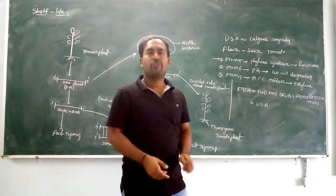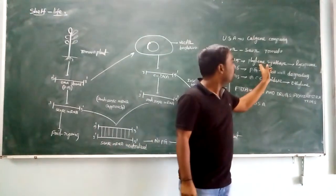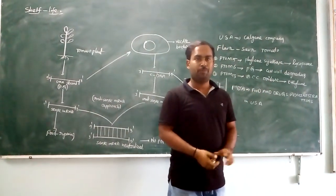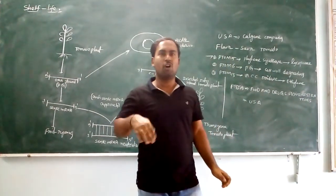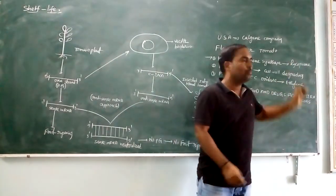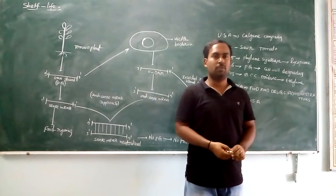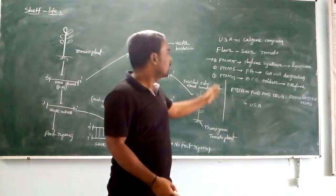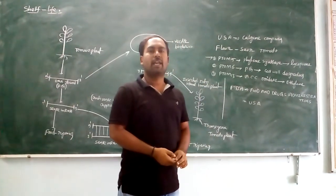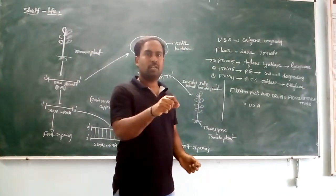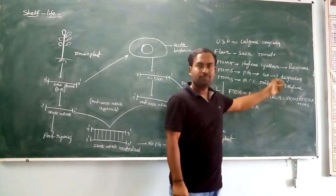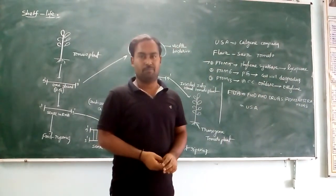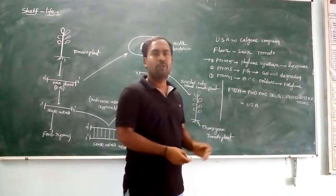Ptom5 gene encodes the enzyme Pectin Synthase, which is involved in the synthesis of lycopene, a pigment. The Ptom6 gene encodes the enzyme Polygalacturonase, which is involved in cell wall degradation.